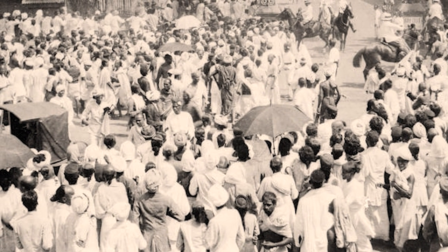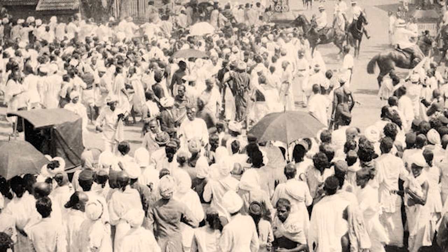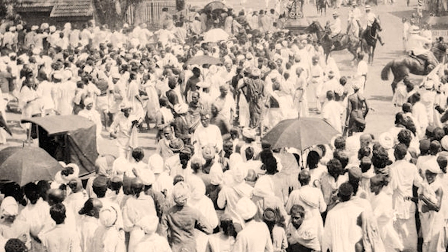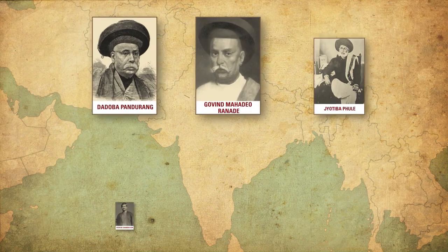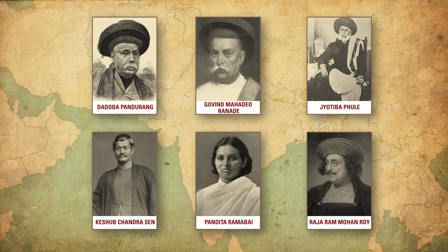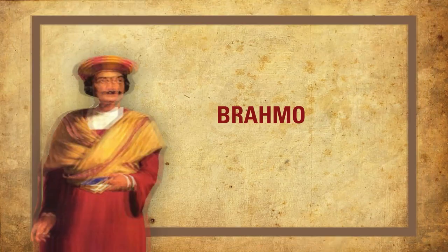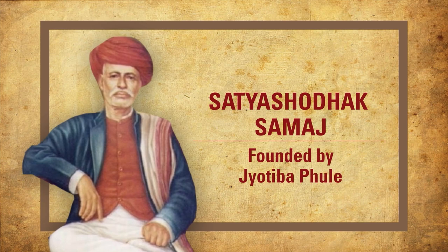From the 1860s onwards, a wave of social reform began to spread across India. A number of social reformers such as Keshab Chandra Sen, Pandita Ramabai, Jyotiba Phule, Govind Mahadev Ranade and many others were campaigning for the abolition of untouchability and child marriage, for women's education and other progressive issues. Organizations such as the Brahmo Samaj, Prarthana Samaj and the Satya Shodak Samaj were campaigning for equality.